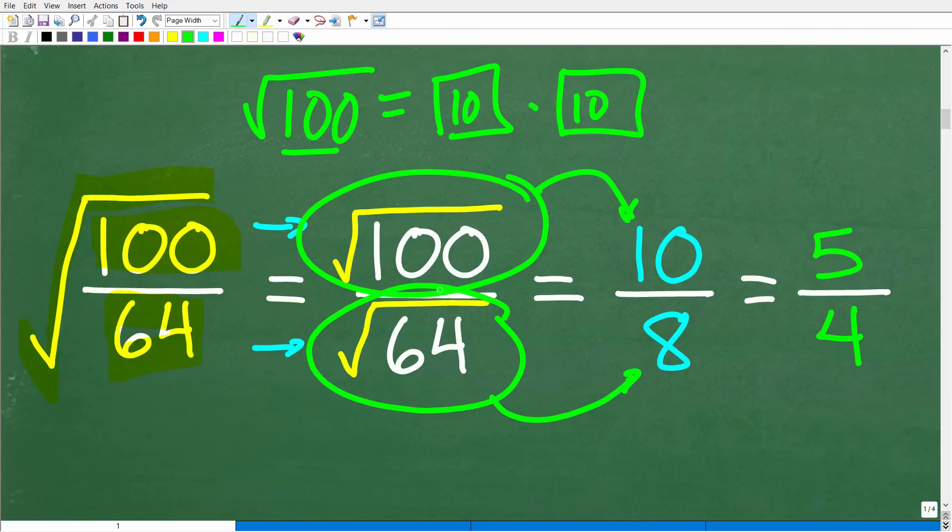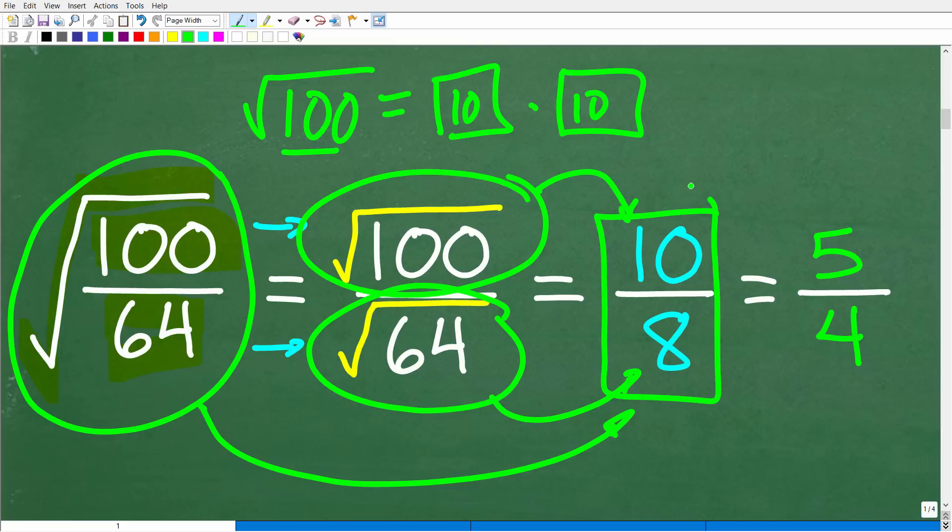Alright. So now, at this point, we just took this expression, this big square root here, and we got it down to this lovely fraction, 10 over 8. But anytime you're dealing with anything in mathematics, especially fractions, you always want to make sure you write them in their simplest form. And here, we can reduce this fraction, 10 over 8, into the fraction 5 over 4, right? Because 2 goes into 10 five times, and 2 goes into 8 four times.